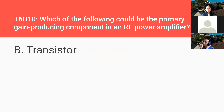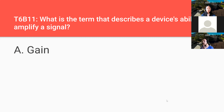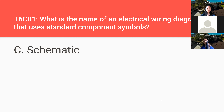Which of the following could be a primary gain-producing component in an RF power amplifier? A transistor — again with the amplification. What is the term that describes a device's ability to amplify a signal? Gain. What is the name of an electrical wiring diagram that uses standard component symbols? A schematic.